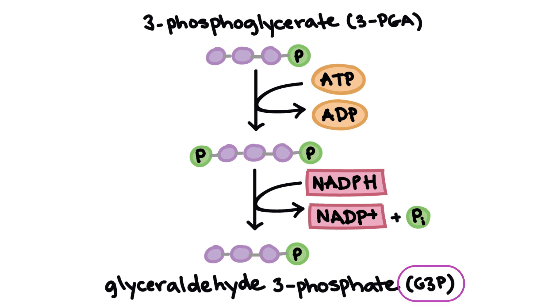Now that we have our G3P, some of the G3P will be used to generate RuBP to keep the Calvin cycle running. The rest of the G3P will exit the cycle to form glucose, the end product of photosynthesis.